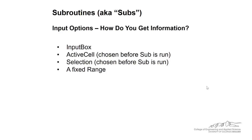So in subroutines, there's a couple different ways that you can normally get information. This is importing information into the VBA subroutine such that you can do calculations. We can do this through the use of an input box, the active cell, so this is chosen before the sub is run. Whatever the active cell is, we can use that value. We can use a selection, or you can have a fixed range.